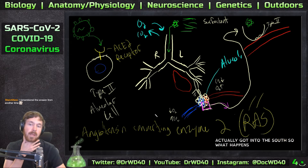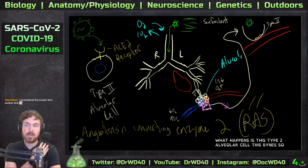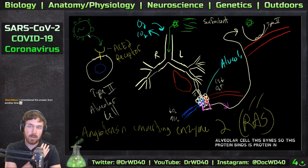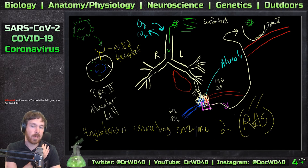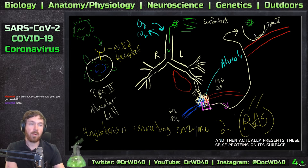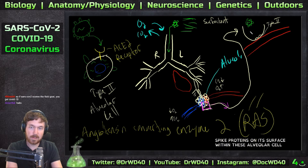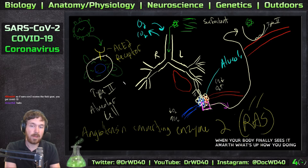What happens is this Type 2 alveolar cell - this spike protein binds this receptor, comes in, puts the RNA in here, and then uses this cell's machinery to replicate that virus. It then actually presents these spike proteins on its surface within these alveolar cells.